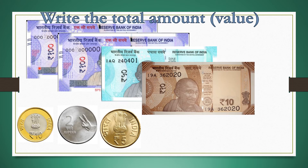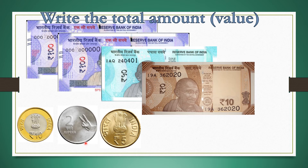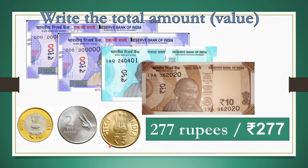Let us solve some more examples. Here we see two 100 rupees notes, one 50 rupees note, one 10 rupees note, one 5 rupees coin, one 2 rupees coin, and one 10 rupees coin. Adding them: 100 plus 100 is 200; plus 50 is 250; plus 10 is 260; plus 10 is 270; plus 2 is 272; plus 5 is 277. The total amount is 277 rupees.